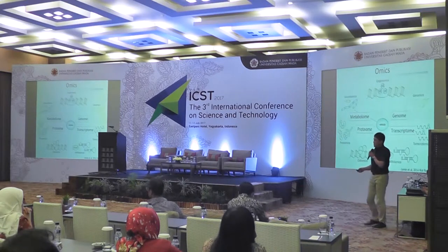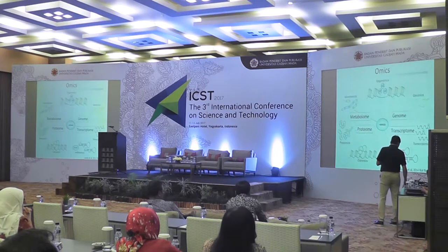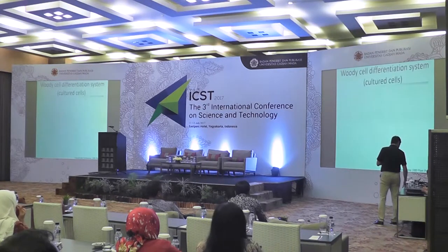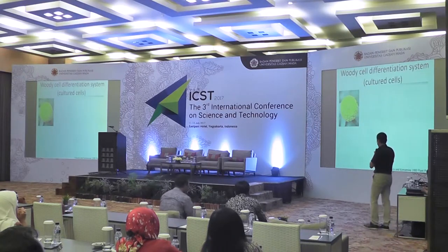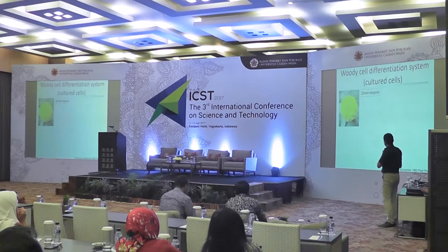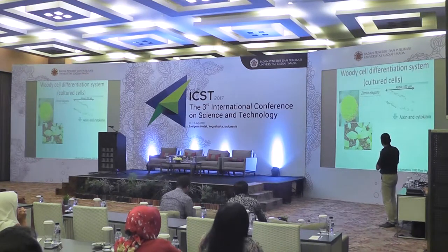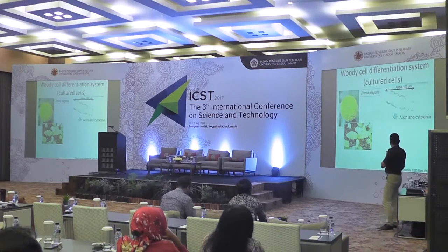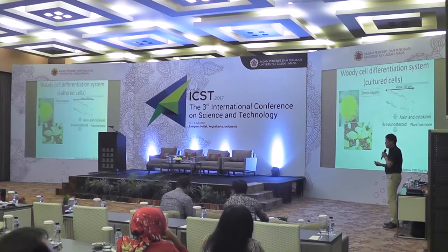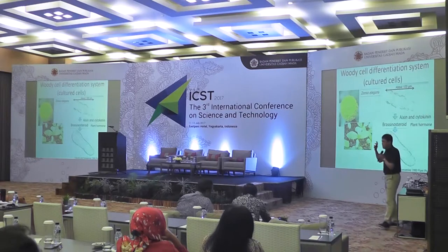I carried out omics analyses — basically transcriptome, proteome, and metabolome — which tell us a lot about new mechanisms of vessel differentiation. I've been using zinnia elegans. This flower has a really interesting feature: using leaf cells of zinnia elegans, we can isolate single cells of about 100 micrometers in size. Using auxin and cytokinin as plant hormones, we can induce differentiation from a parenchymal cell to a vessel element in culture.